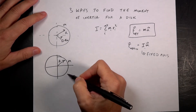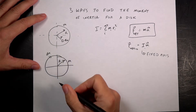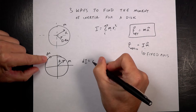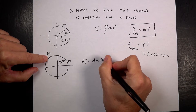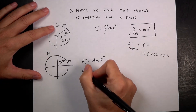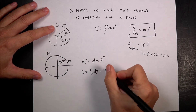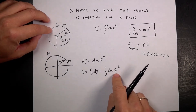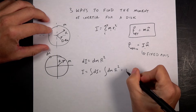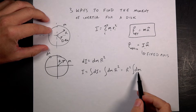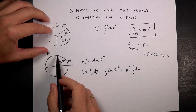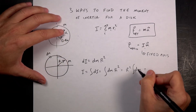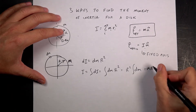I need to break the ring into tiny little pieces dm, then add up the moment of inertia for each piece. Di equals dm·r². To find the total moment of inertia: I equals the integral of di, which is the integral of r²·dm. Since r is a constant for the ring, I can pull it out: r² times the integral of dm. The integral of dm is just the total mass m. So the moment of inertia of a ring is mr².